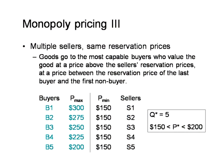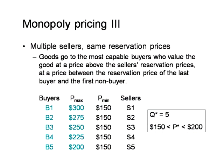Another case: suppose five sellers all have the same reservation price of $150. Because the least capable buyer, B5, is willing to pay more than $150, all five units can be exchanged — all five buyers will end up purchasing a unit. The equilibrium price will lie somewhere between the least capable buyer's willingness to buy at $200 and the sellers' reservation price of $150.